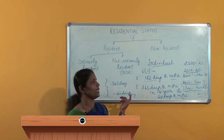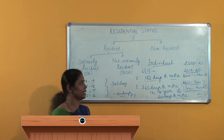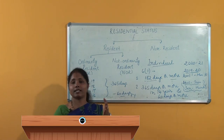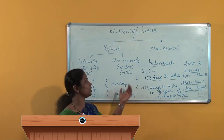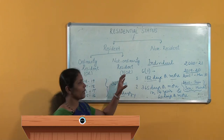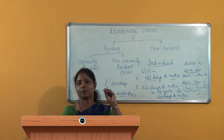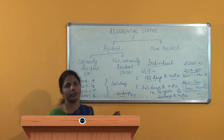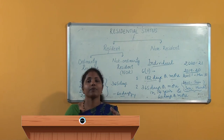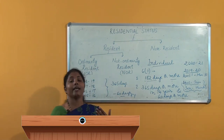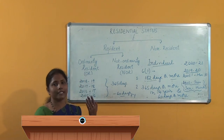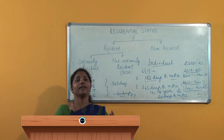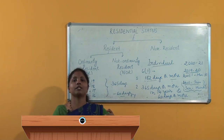While considering all these, we have to note that the presence or stay of an individual need not be continuous. He need not stay for 182 days or 365 days in one stretch — totally in that particular period he must be in India for the specified number of days. The stay need not be continuous. Also, he need not stay in his own residential house; he might have stayed in a rented house, a hotel, or the house of a friend or relative — wherever it may be.